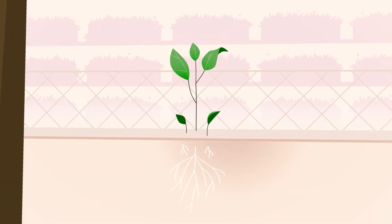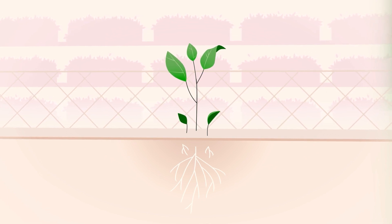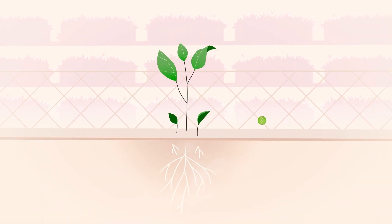At Lettuce Grow, we use an indoor growing method called aeroponics, which doesn't use soil. Instead, we feed plant roots with a fine mist.